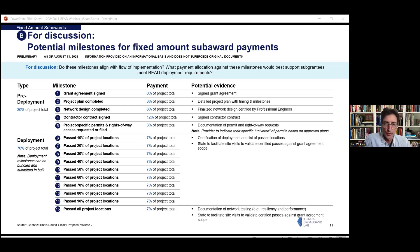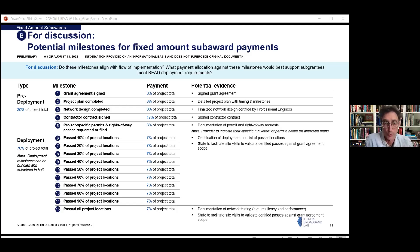Then you go to the second broad phase: deployment. This is pretty straightforward — breaking up the project into each decile of locations passed. Each of those milestones, you tell the state you have reached that milestone, provide some certification, and that unlocks the next tranche of funding. This should look relatively familiar. This is implementation detail as the state finalizes this, and the final versions will be made available to applicants. This is a pretty fundamental aspect of how the state of Illinois intends to take advantage of the flexibility provided for the BEAD program and implement it in Illinois to streamline things for both the state and providers.